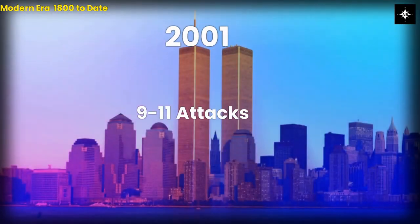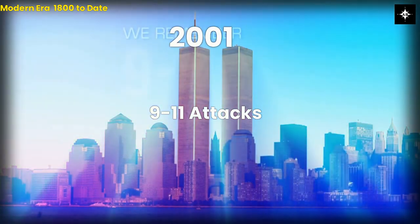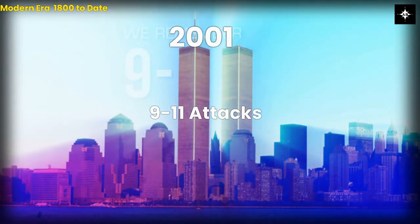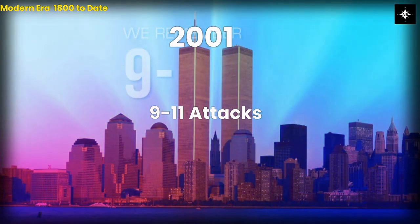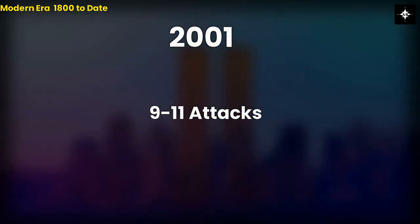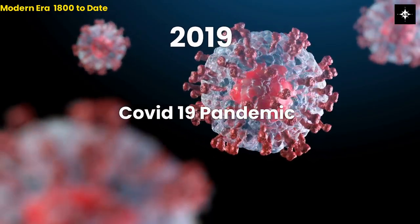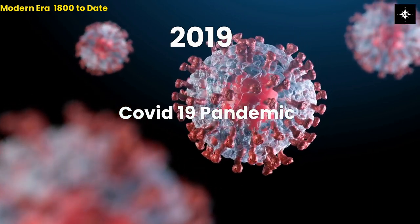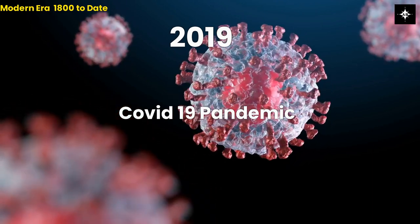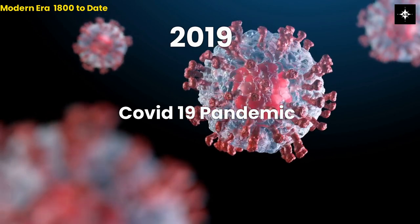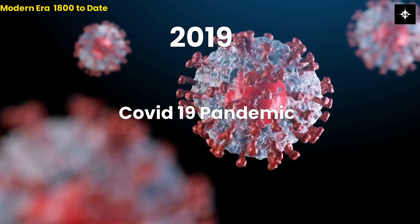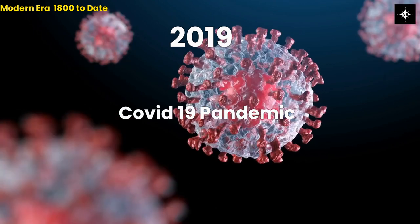Sixteenth, in 2001, the September 11 terrorist attacks, orchestrated by the extremist group Al-Qaeda, killed nearly 3,000 people in New York City, Washington D.C., and Pennsylvania, and prompted the United States to launch the war on terror. Seventeenth, in 2019, COVID-19 spread worldwide. COVID-19 is a highly contagious respiratory illness caused by the SARS-CoV-2 virus that has infected over 400 million people and caused over 6 million deaths worldwide.